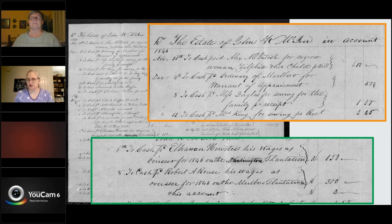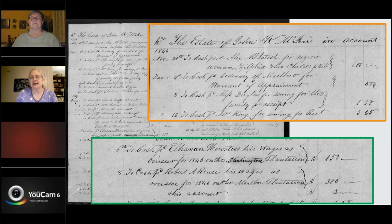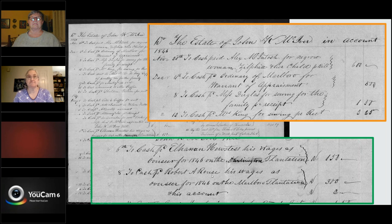The reason I was so interested in this particular document is this entry: 'To cash paid Ellen and Hustus, his wages as overseer for 1846 on the Darlington Plantation — $150.' And: 'To cash Robert A. Rouse, his wages as overseer for 1846 on the Marlboro Plantation — $300 and his account for two.' He may have continued as a shoemaker alongside, though it wasn't his primary occupation after the 1840 census. Ellen and Hustus is reportedly the stepfather of Robert Rouse, and Robert Rouse is buried in the Hustus Carter Cemetery. This is my connection to the McKeever family — I'm not related to them, but my ancestor worked for them.